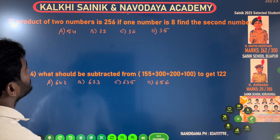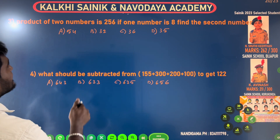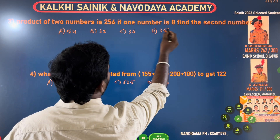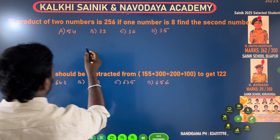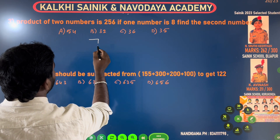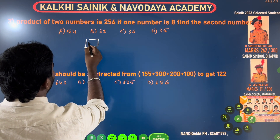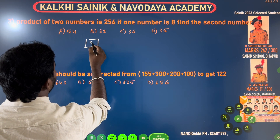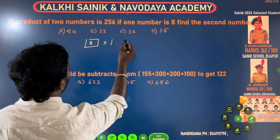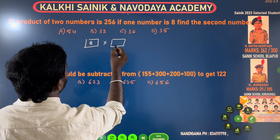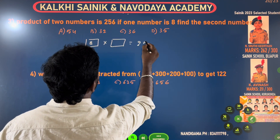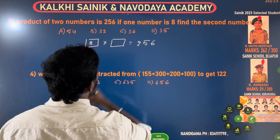Next question. The product of two numbers is 256. One number is 8. The product of two numbers is 256, and I know one number is 8.